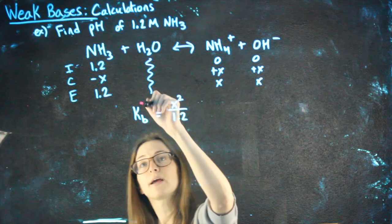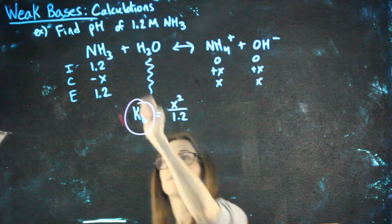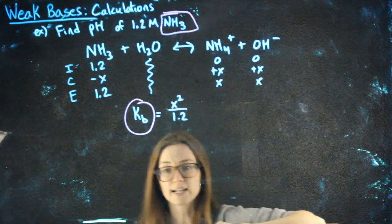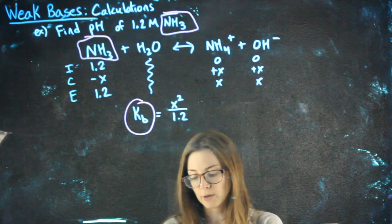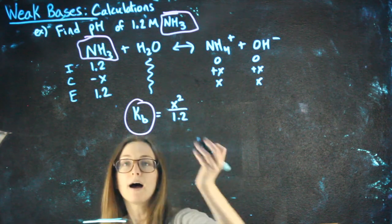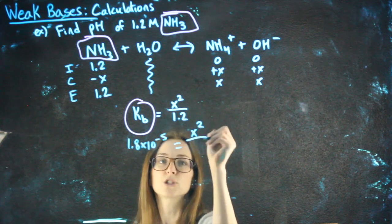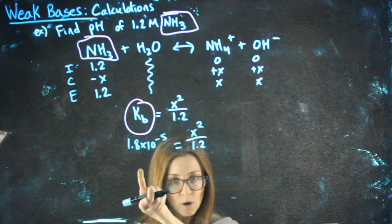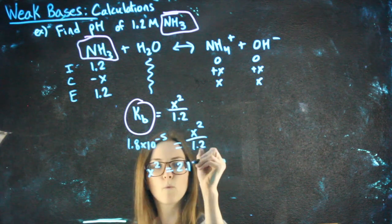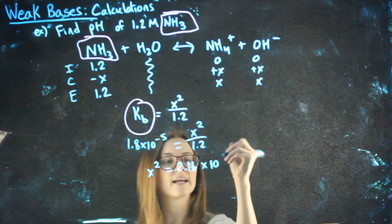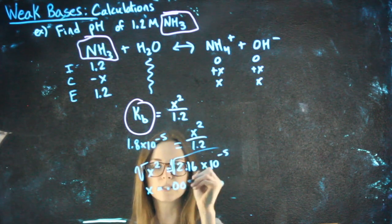The K value that we're going to get off the chart, make sure you're getting it from the base section of the chart. We're always looking for the K value of the weak acid or the weak base, whatever is on the left-hand side. So when I look on the weak base section for NH3, I see a value of 1.8 times 10 to the negative 5th. That's my x squared over 1.2. You can put this over 1 and cross multiply if that helps. We get x squared equals 2.16 times 10 to the negative 5th. Square root both sides, and I get an x value of 0.0046.